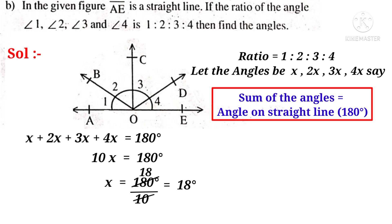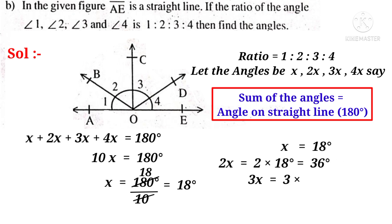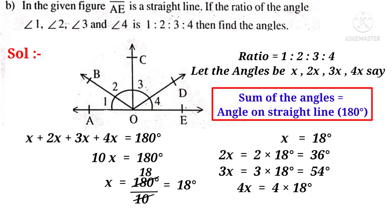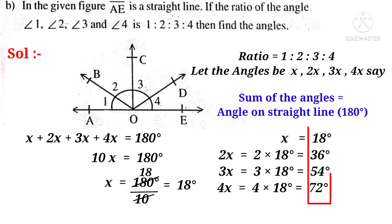The first angle is x, which is equal to 18 degrees. The second angle 2x is 2 into 18, equal to 36 degrees. The third angle 3x is 3 into 18, equal to 54 degrees. The fourth angle 4x is 4 into 18, equal to 72 degrees. So, the sum of these angles is 180 degrees. The angles are 18 degrees, 36 degrees, 54 degrees, and 72 degrees.